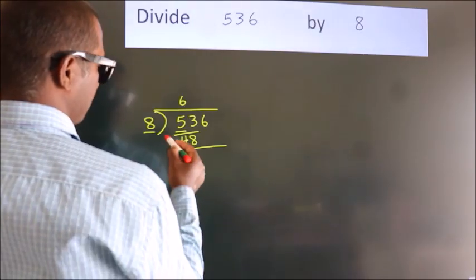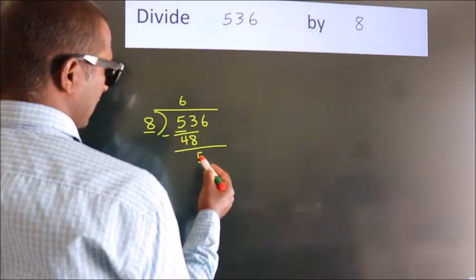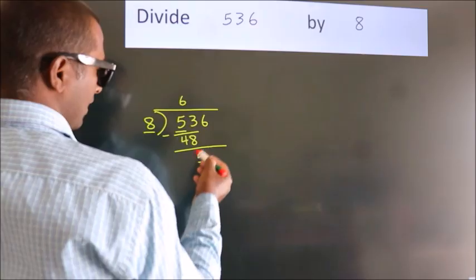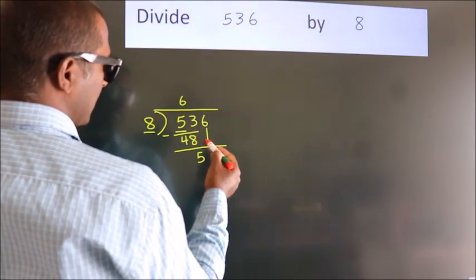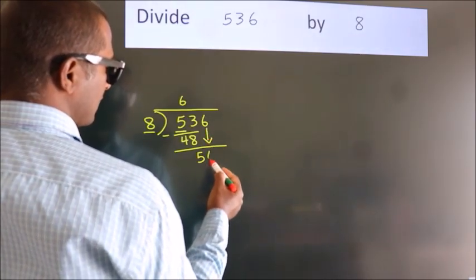Now we should subtract. We get 5. After this, bring down the next number. So, 6 down.